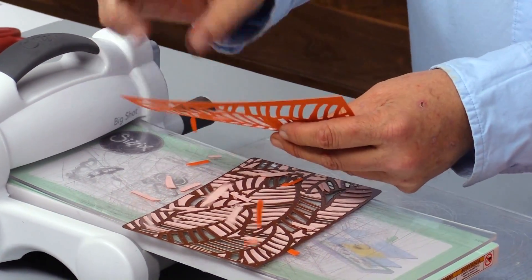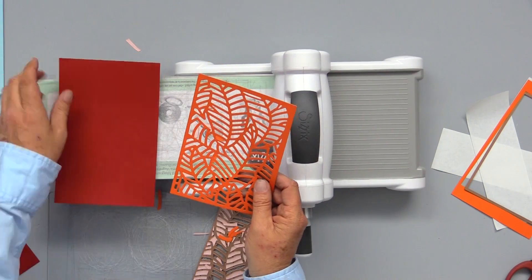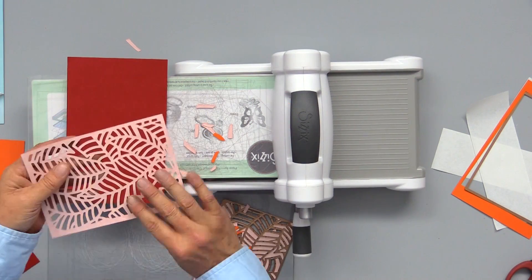Remove the die from the cardstock. Just get all those little pesky pieces out. And then I'm going to place this on top of a, there we go, that's going to look good.